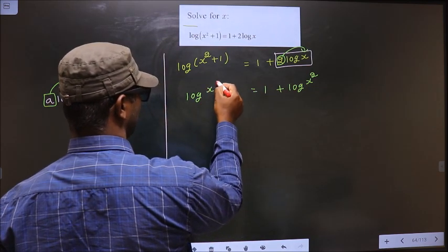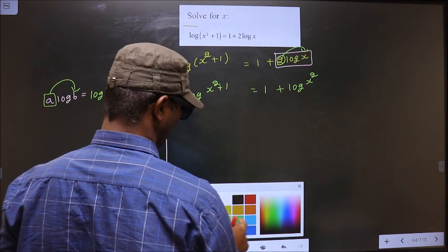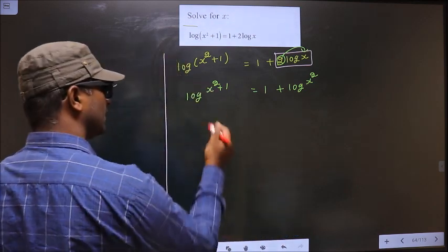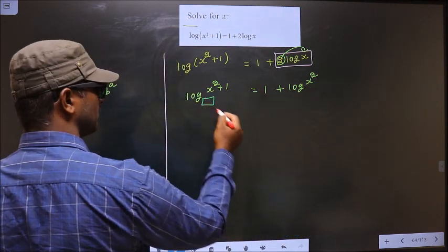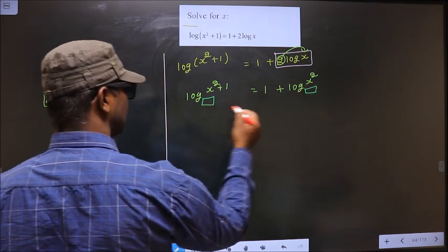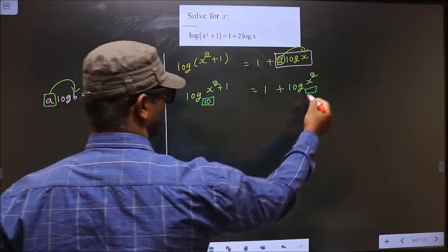Now here, base is not specified. Whenever base is not specified, you will assume it to be 10 always.